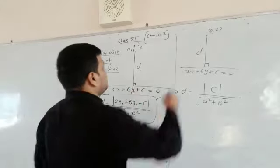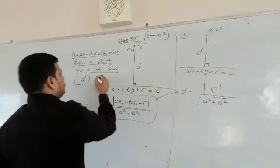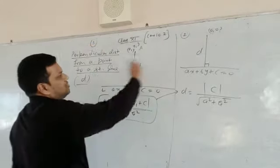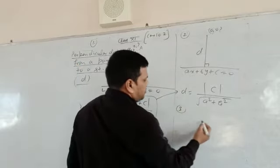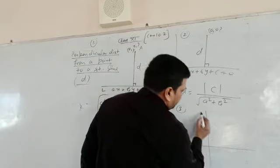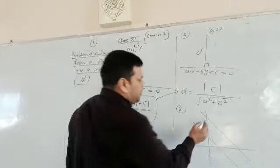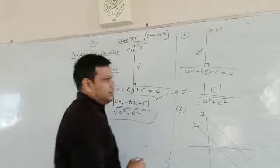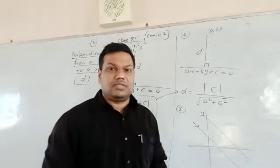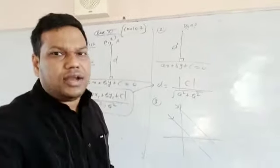Now, by using this second one, this was the first one, and this is the second one. Now, the third one, the distance between two straight lines. They must be parallel, then we can find out the distance between these two parallel lines.